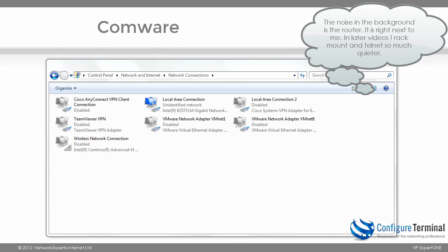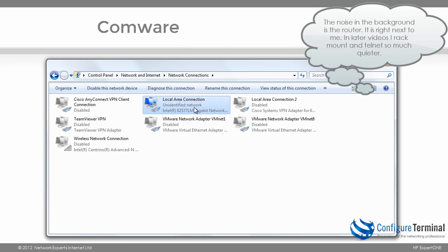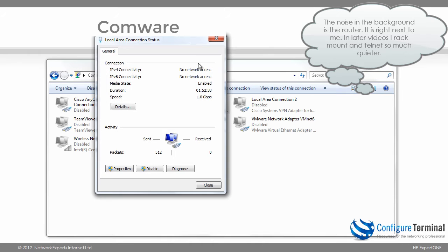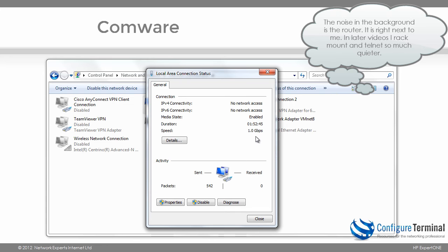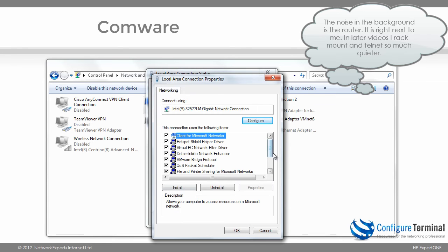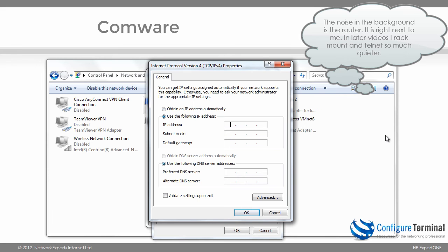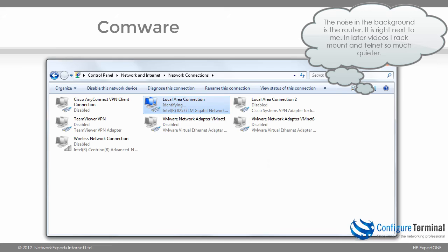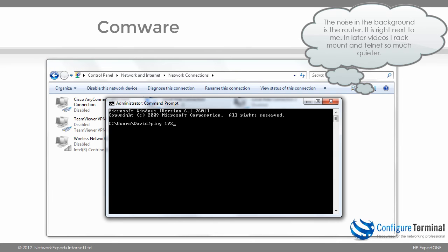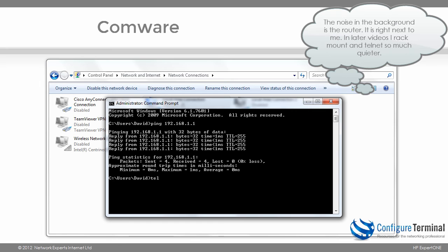I've connected the PC to the router using an ethernet cable, so I need to configure an IP address on my PC. On my local area connection you can see we're connected at one gigabit per second. I'll go to Properties, TCP/IP version 4 and give myself an IP address of 192.168.1.2, default gateway 192.168.1.1. From a CMD prompt, let's ping the router — ping 192.168.1.1 — and as you can see, the ping succeeds.